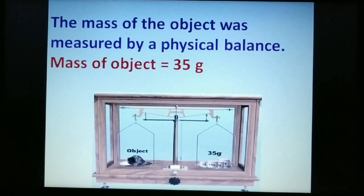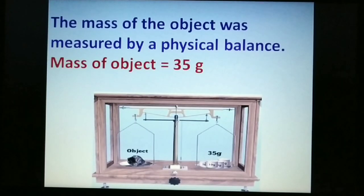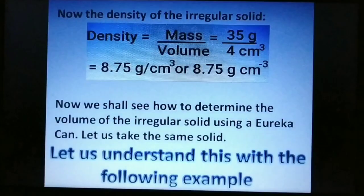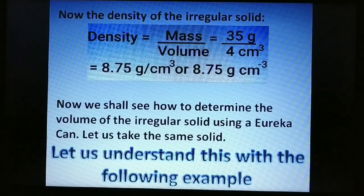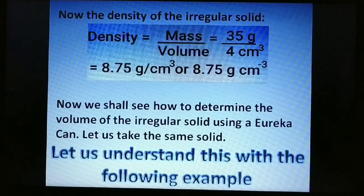The mass of the object was measured by a physical balance and found to be 35 grams. Therefore, density = mass ÷ volume = 35 g ÷ 4 cm³ = 8.75 gram per centimetre cube.